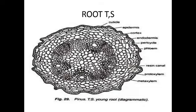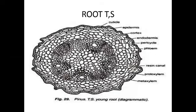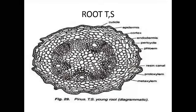Resin canals are present in the Pinus root system. They are present between two protoxylems. Alternate to these xylem tissues, phloem tissues are present. The xylem tissues mainly help in conduction of water and minerals to the total plant, and phloem's main function is translocation of organic substances to the total plant.